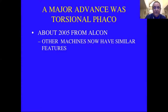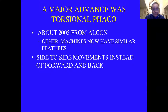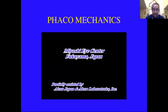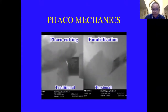A major advance was torsional FACO, invented around 2005. A number of machines now have similar features where you have side-to-side sweeping motions instead of forward and back like a jackhammer. It goes side-to-side, so it doesn't repel lens material — it shaves it, and it cuts on both directions of movement. This shows longitudinal versus torsional motion.